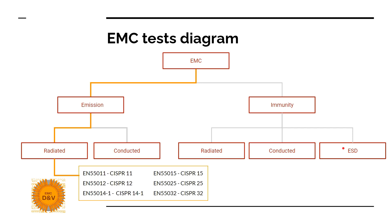So where to find radiated emission in a typical EMC test diagram? The type of test is emission and radiated, and here we will have a couple of tests. One of these tests is voltage disturbances and we have standards associated with these tests: EN 55011 for medical, laboratory and industrial equipment; EN 55012 for automotive emission off-board receivers; EN 55025 for automotive on-board receivers; EN 55014-1 for emission from household appliances; EN 55015 for emission from lighting equipment, for example LED lamps; and EN 55032 for multimedia equipment.